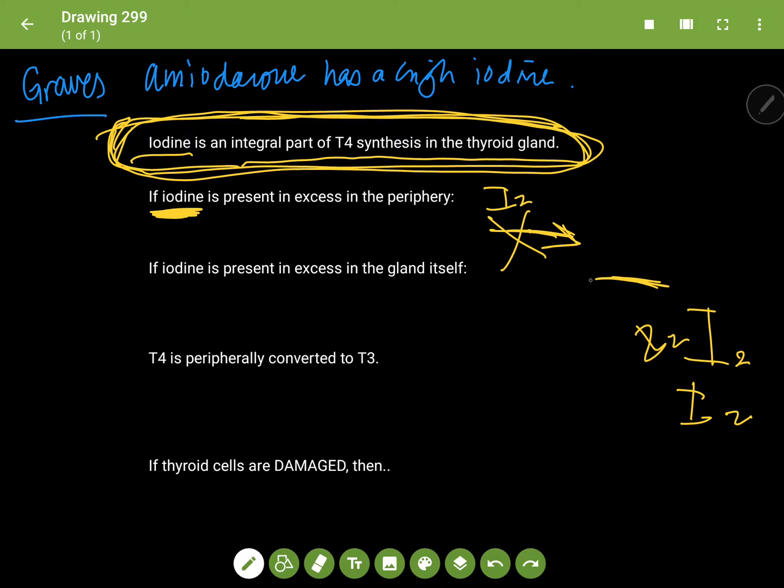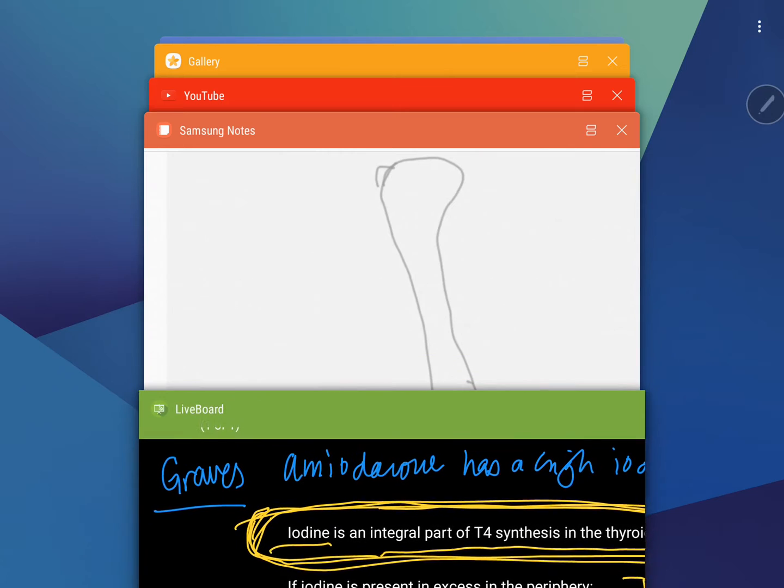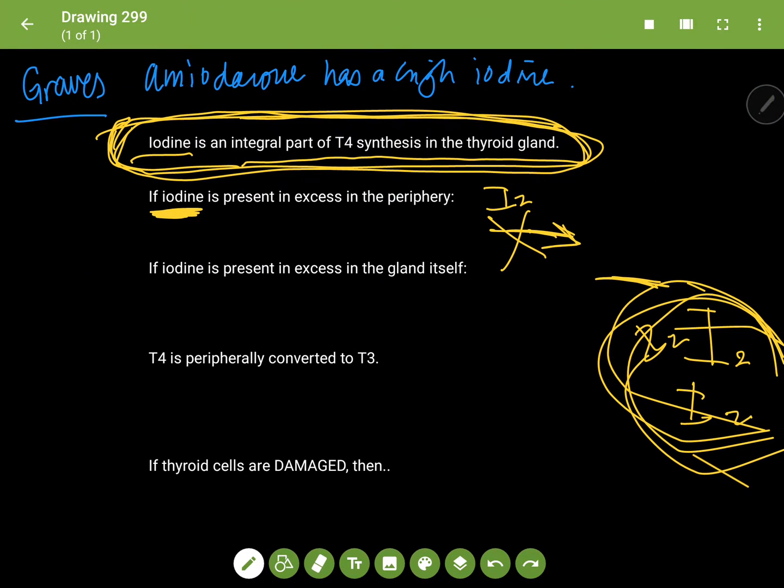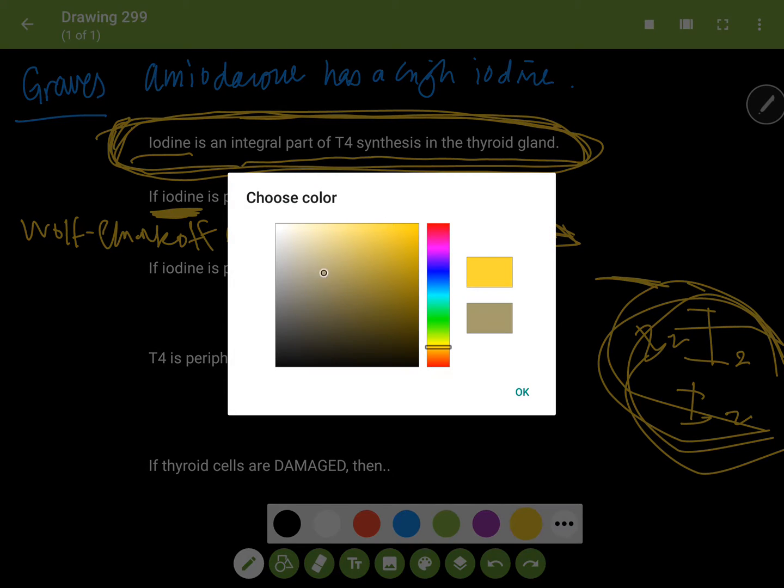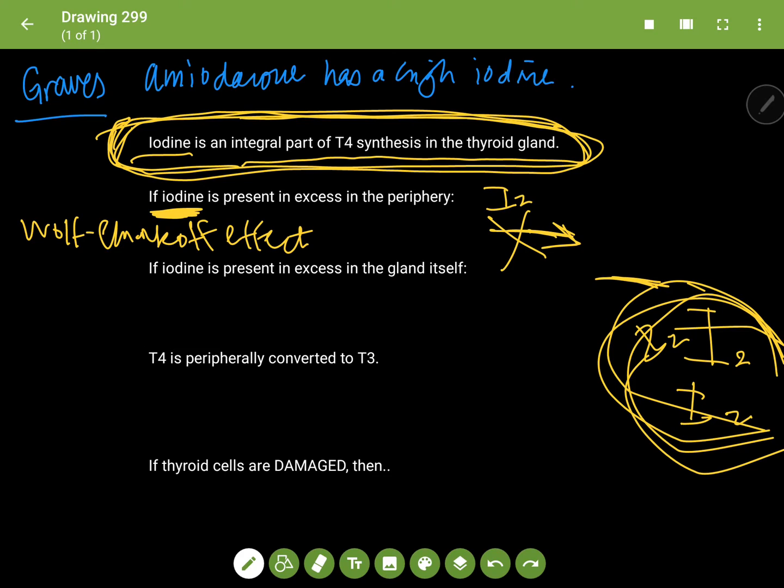Where this reaction goes, that's something called the Wolff-Chaikoff effect. So the thyroid hormones in this case—I'm going to call it number one—I already just told you you had a decrease in T4.